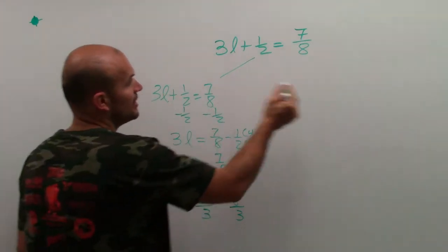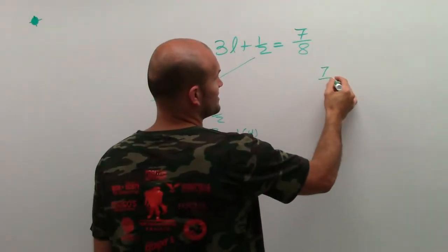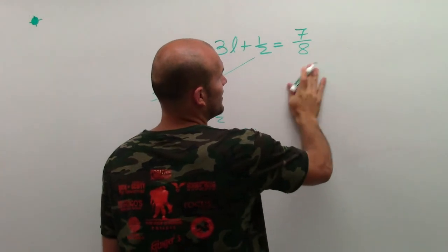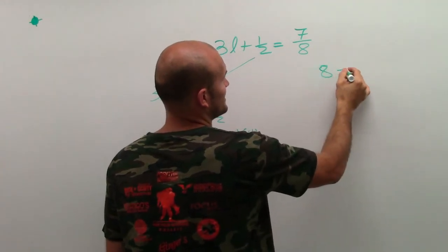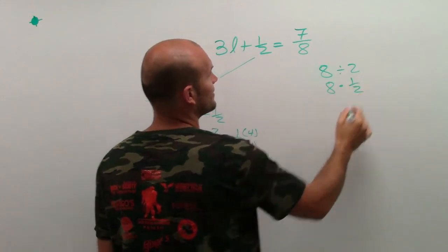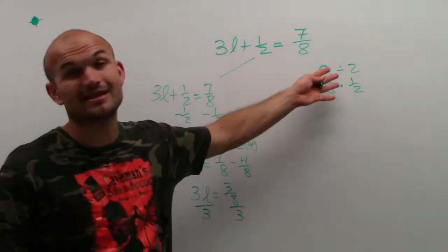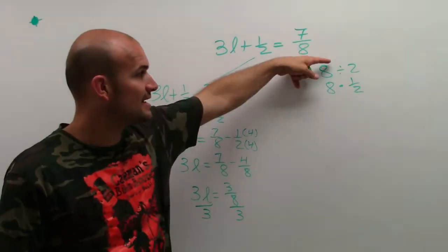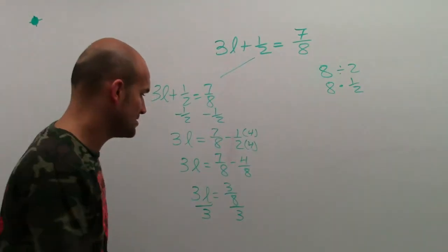Let me show you an example. If I said 8 divided by 2 is the same thing as 8 being multiplied by 1 half, right? They're the same answer. Go ahead and check it if you don't believe me. But instead of dividing by a number, we can multiply by its reciprocal.